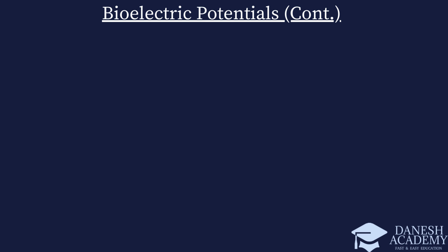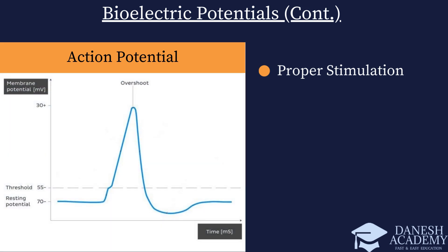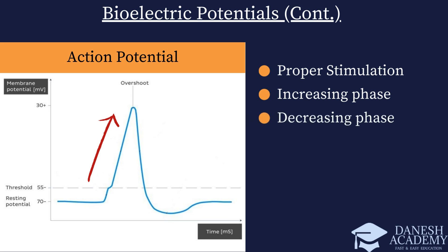Now let's look at action potentials. When appropriately stimulated, excitable cells such as neurons and muscle cells exhibit an electrical signal known as an action potential. An action potential has two distinct phases: the increasing phase, where the cell's membrane potential rapidly increases reaching a peak; and the decreasing phase, where the membrane potential rapidly decreases, returning to its resting state. After an action potential is generated, the cell enters a refractory period, during which it cannot be easily stimulated to produce another action potential.